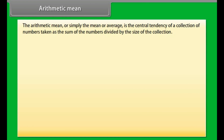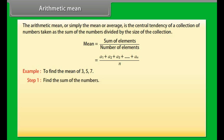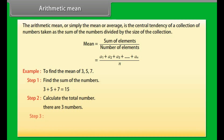The arithmetic mean, or simply the mean or average, is the central tendency of a collection of numbers taken as the sum of the numbers divided by the size of the collection. Mean = sum of elements / number of elements = (a1 + a2 + a3 + ... + an) / n. Example: Find the mean of 3, 5, and 7. Step 1: sum = 3 + 5 + 7 = 15. Step 2: there are three numbers. Step 3: mean = 15 / 3 = 5.